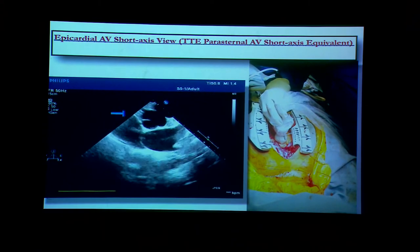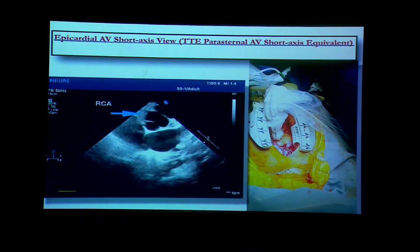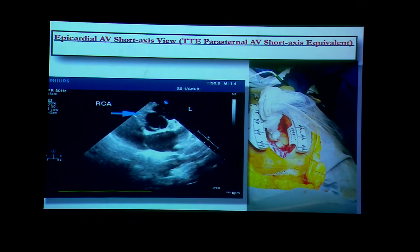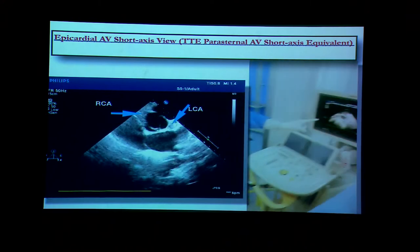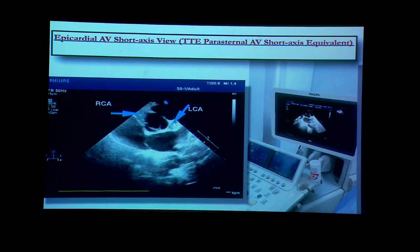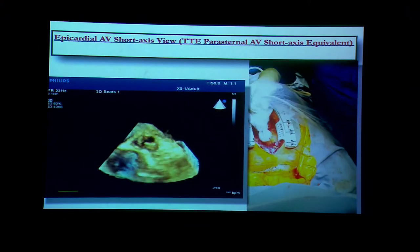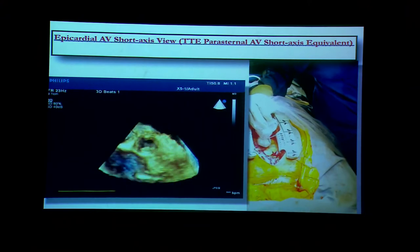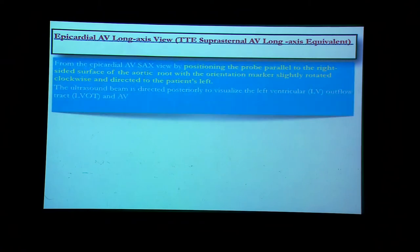By moving the probe slightly forward, we can see anterior structures like the right coronary artery and left coronary artery. These structures can be easily visualized with a minor probe movement. We can even use a transthoracic 3D probe to get very nice structures of the pulmonary valve and the main pulmonary artery. From the aortic valve short axis view, we proceed to the aortic valve long axis view.